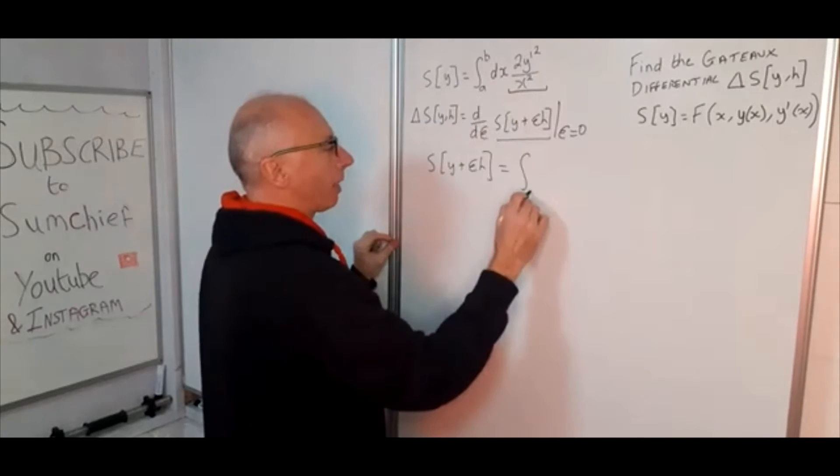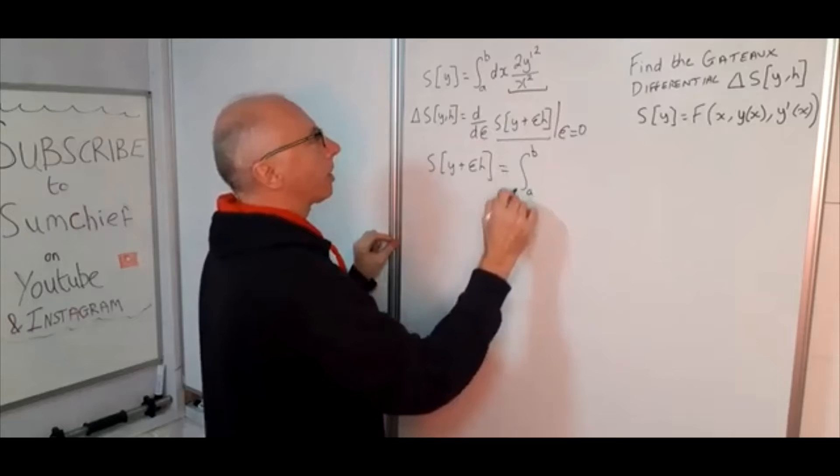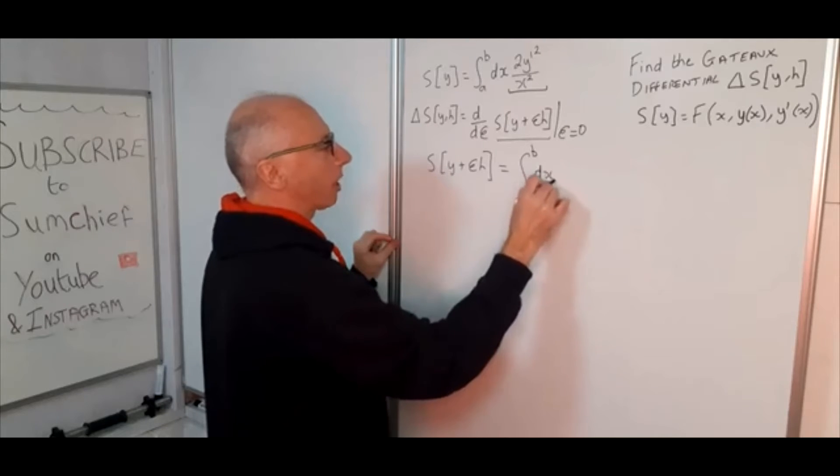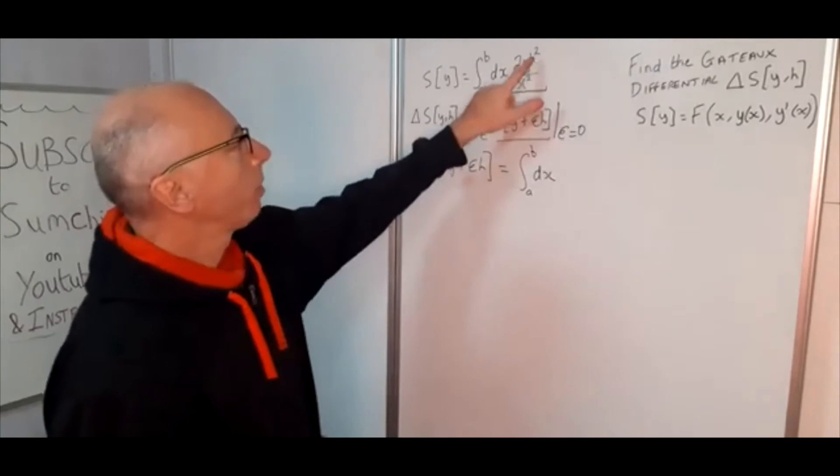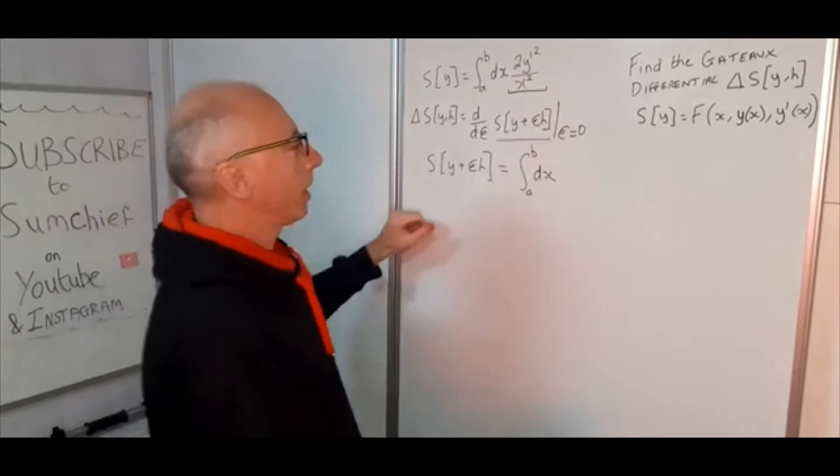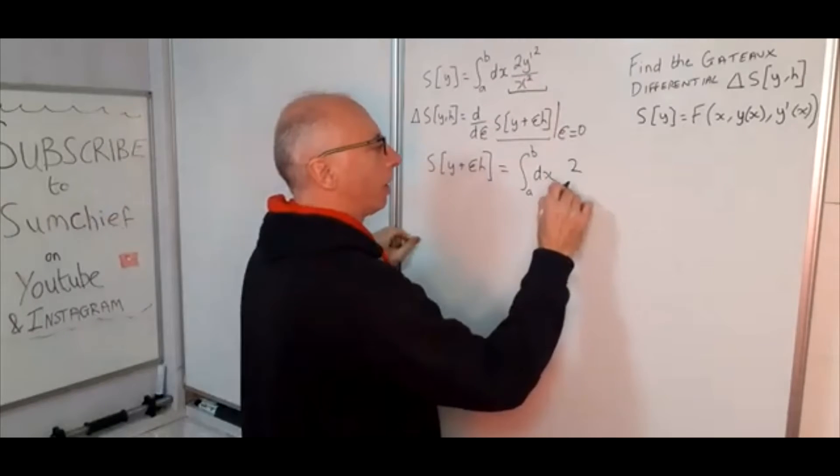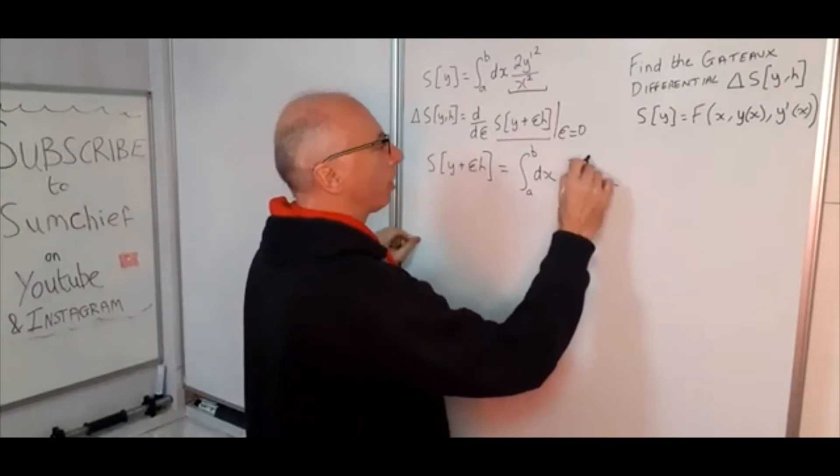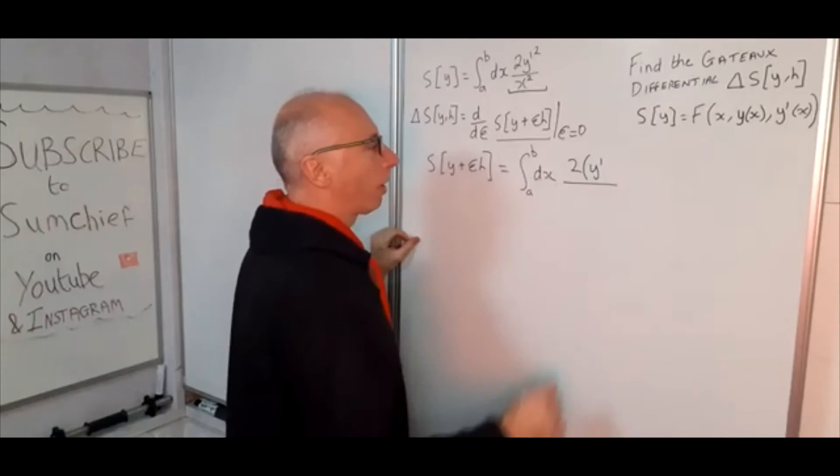So the integration points stay the same a and b and it is still with regards to x. And then we have got 2y prime squared. So now I will keep that as the fraction, bring the two out front. So then we have got y prime.